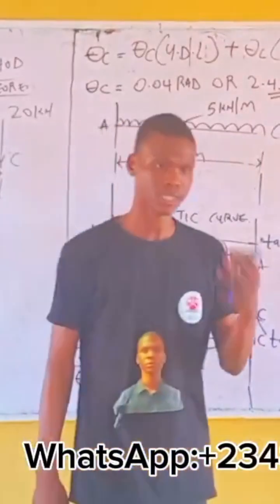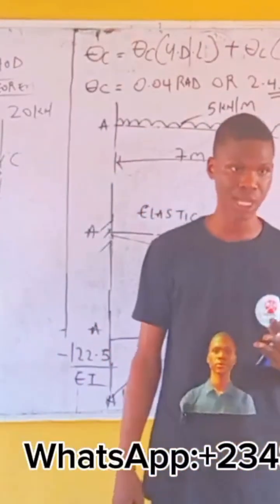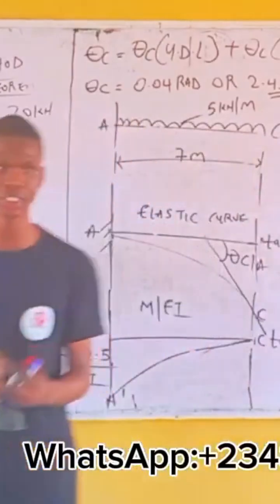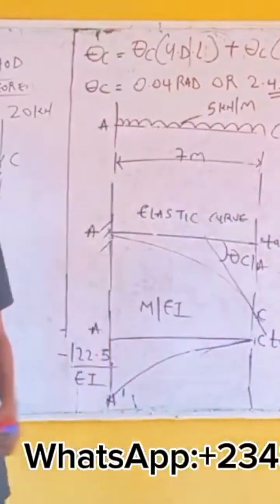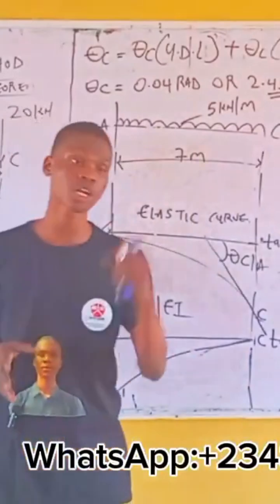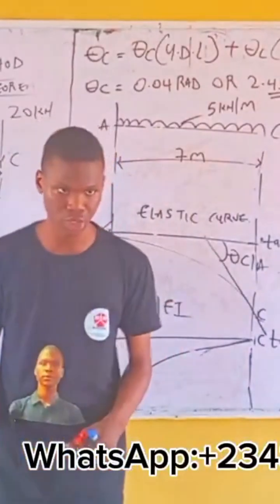Deflection at C, you will get the deflection due to point load at C and the deflection at C due to UDN, right? And by the term 2 says that the area multiplied by the what? Centroid.